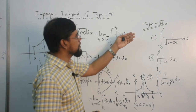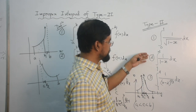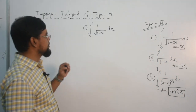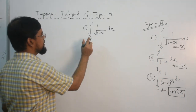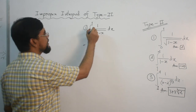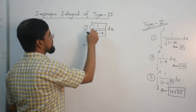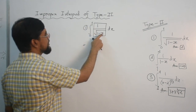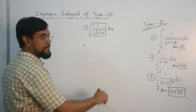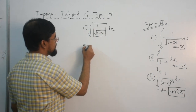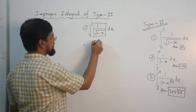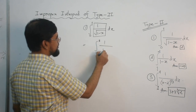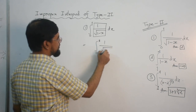In this lecture I am going to evaluate three examples — all of them are improper integrals of type 2. For example 1, this integral is improper because the integrand becomes infinity at its upper limit. If you put x = 1, it becomes 1 divided by 0, which is infinity. So you need to replace 1 by k or k1.